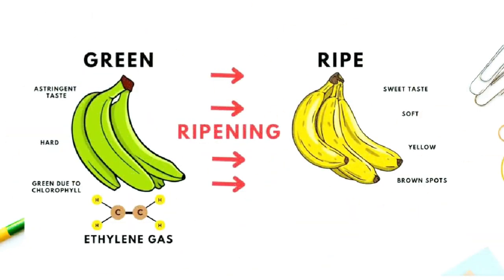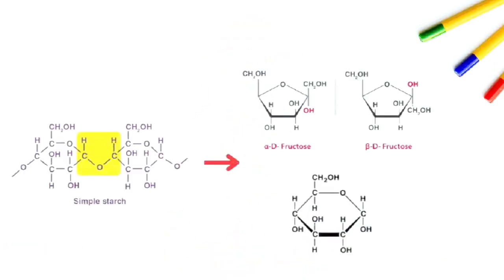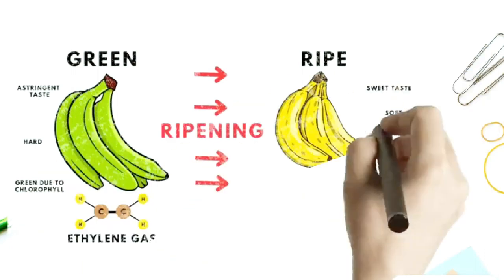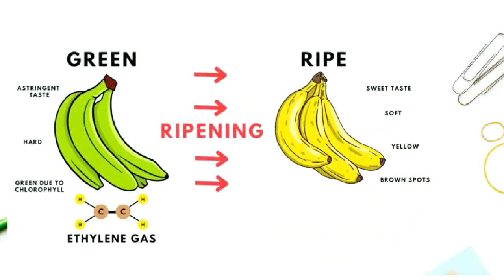For the symbolic representation, the ripening of bananas is an example of a redox reaction. The ripening process in bananas involves the conversion of starches into sugars such as glucose and fructose, which makes the fruit sweeter and softer. This transformation, from starch to sugar, is a redox reaction, with the starch being oxidized, losing electrons, and the sugars being reduced, gaining electrons.